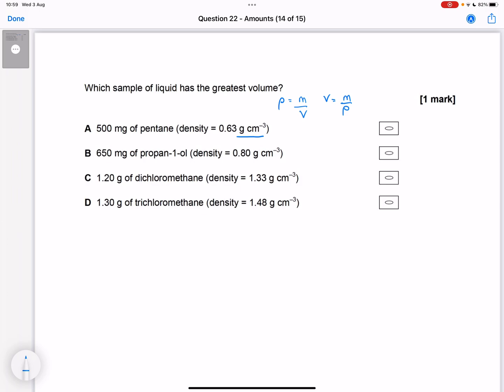So we can take our mass, making sure it goes into grams. 500 milligrams is 0.5 of a gram, and divide it by our density. That is going to give us our volume in centimeters cubed, 0.79 centimeters cubed.